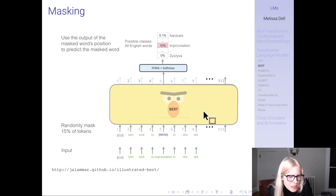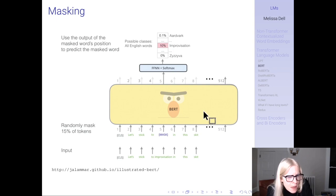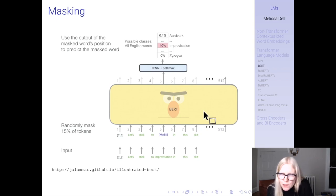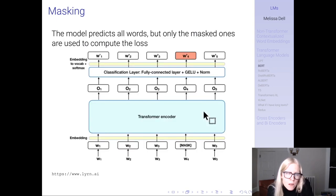We have a visual representation courtesy of Jay Alammar. You feed in a CLS class token first, then each word or token in the sequence, randomly masking 15% of them. You use the output at the masked word's position to predict what word it was, using a feedforward network and softmax, just as in other language models. The model predicts all words, but only the masked ones are used to compute the loss.